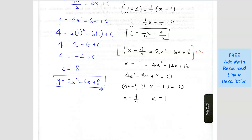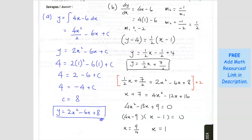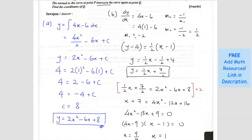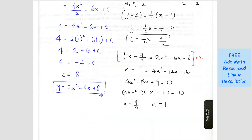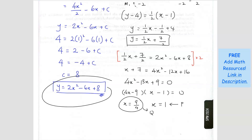So we see x equals 1 and x equals 9 over 4. We already know coordinate P is (1, 4), so x equals 1 corresponds to point P. That means x equals 9 over 4 should be coordinate Q. The intersect between the straight line and the curve gives two points — the first is at Q and the second is at P, because the normal passes through the curve at P. We don't need to find P; we just need Q, so we use x equals 9 over 4.